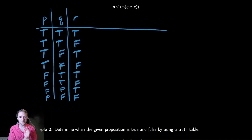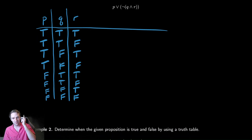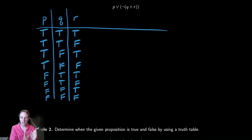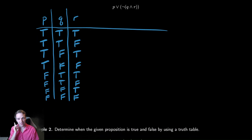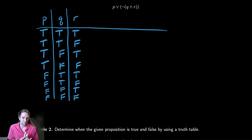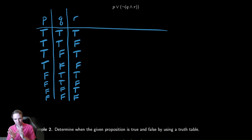If we try to reason through how many possible combinations there would be, each variable has two options — it's either true or false. And if you fix one of them, the other variables also each have two options, so this grows like 2 to the n. If you have three variables, we have eight combinations. When we had two variables, we had four, and when we had one variable, we had two — so it's looking very much like 2 to the n.